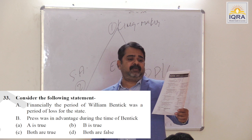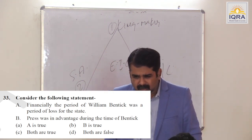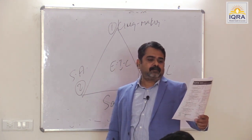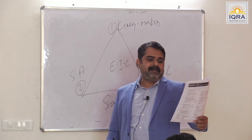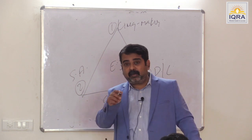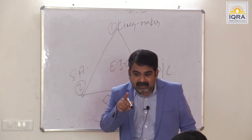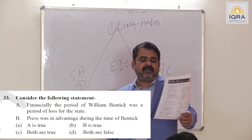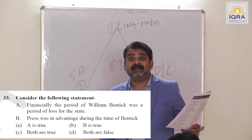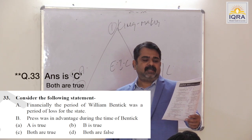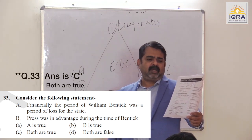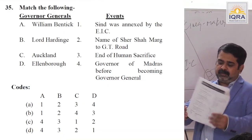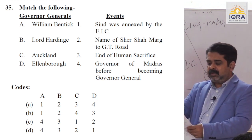Financially, the period of William Bentinck was a period of loss for the state — true. The reason was the Burma War, which depleted the treasury. An important development in the financial system by Bentinck was the regularization and licensing of opium trade. Press was in advantage during Bentinck's time — true; he called the press a safety wall. Answer is B, both are true. Calcutta Medical College was established during the time of William Bentinck. Answer is D.